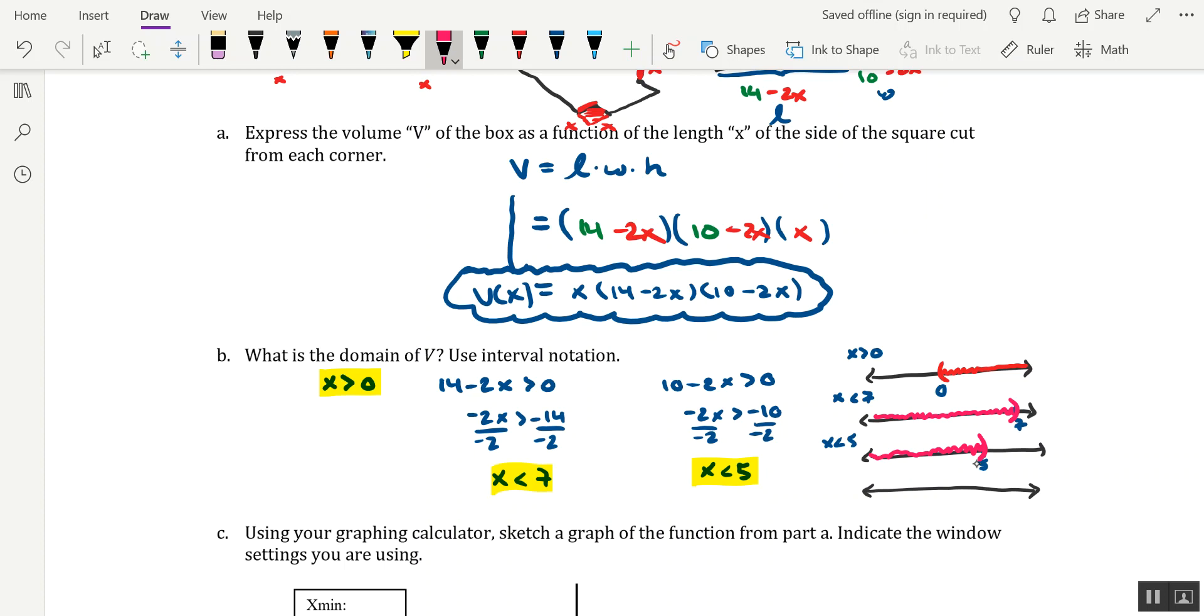So, what does this mean about the domain of the volume function? Let's say domain of v of x. Well, we're going to want to take what's in common between all three number lines. So if we look at the first two number lines, the one for x is greater than 0 and the one for x is less than 7, what's common between the first two number lines is the shaded region between 0 and 7.